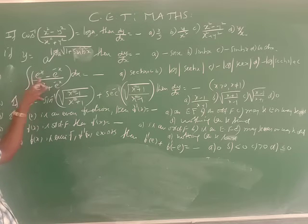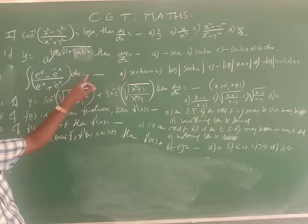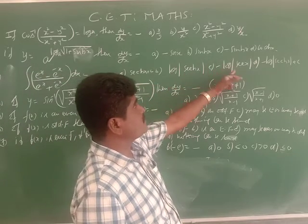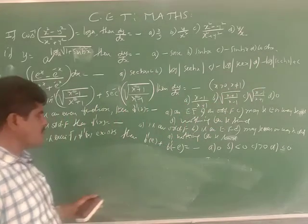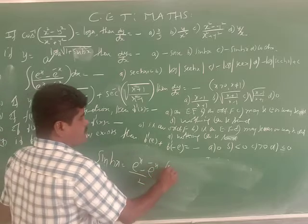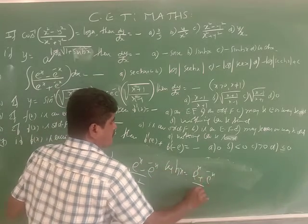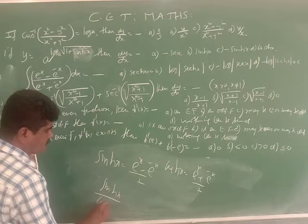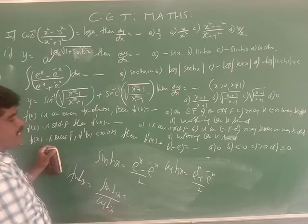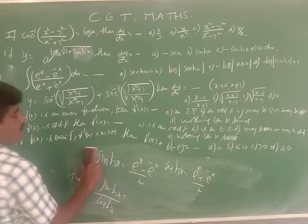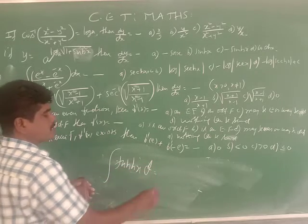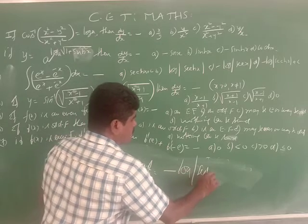Third question: integration of (eˣ − e⁻ˣ)/(eˣ + e⁻ˣ) dx. Recall: sinh x = (eˣ − e⁻ˣ)/2 and cosh x = (eˣ + e⁻ˣ)/2. So tanh x = sinh x / cosh x = (eˣ − e⁻ˣ)/(eˣ + e⁻ˣ). The integration of tanh x is −log(sech x) + c.